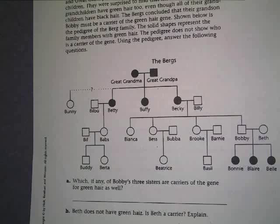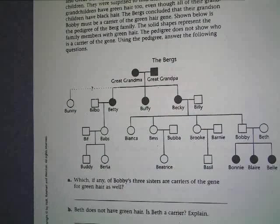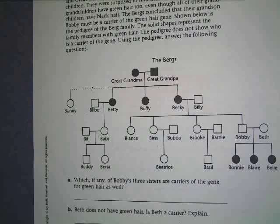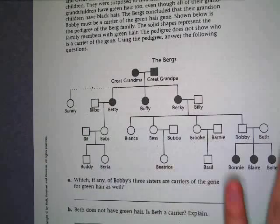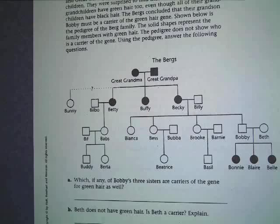That's your worksheet that we're going to be doing later. Notice that these people have names. Usually people don't have names on a pedigree when we're solving it in science because in a normal family, sometimes names are passed down. So you might have an Uncle Bobby, but then your brother's also named Bobby, and that's very confusing. So normally we number these.